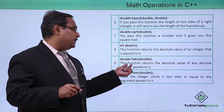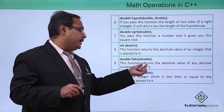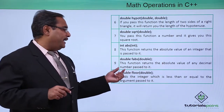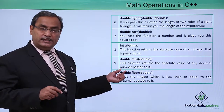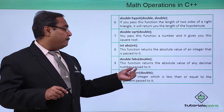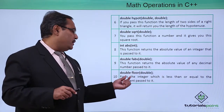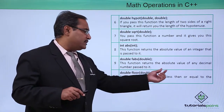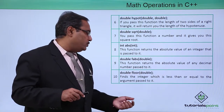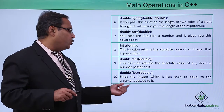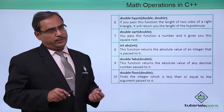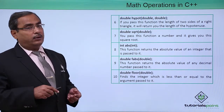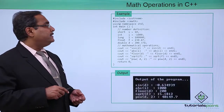fabs returns the absolute value of any decimal number passed to it. floor finds the integer which is less than or equal to the argument passed to it. Similarly, we also have the ceiling function.